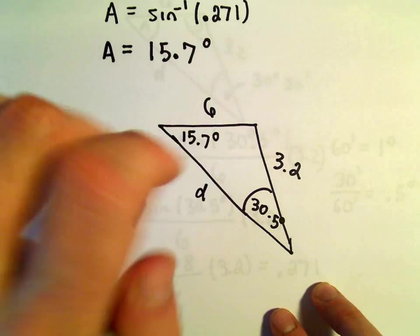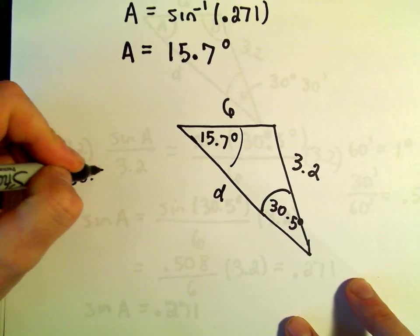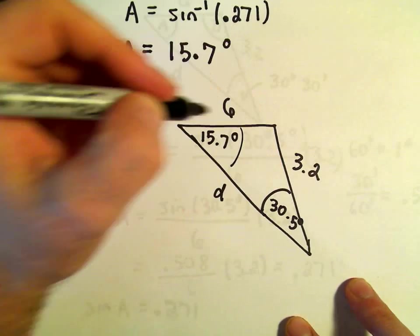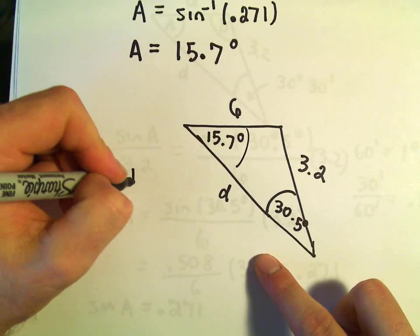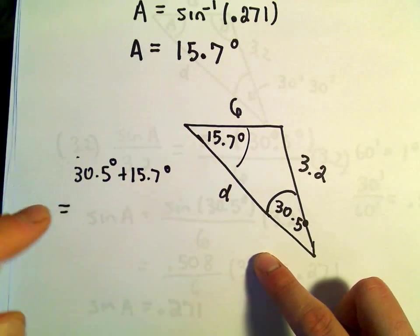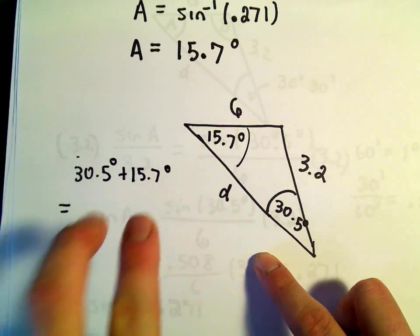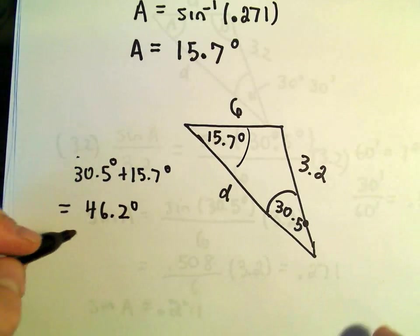Well, we know that the angles inside of the triangle add up to 180. So if we do 30.5, I think we were calling this capital D. So 30.5 plus 15.7 degrees, if we add those together,